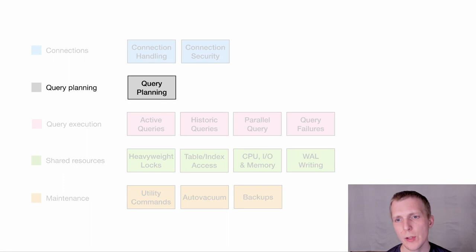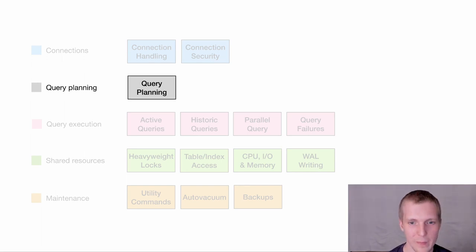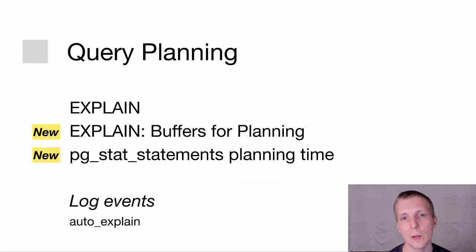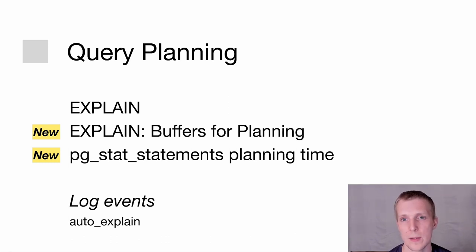Next, query planning. Query planning is obviously very important — every query gets planned at some point. If you look at query planning, EXPLAIN is our main Swiss Army knife. There are two good improvements in Postgres 13: first, you now see the buffers being used for planning as part of EXPLAIN output; and second, pg_stat_statements now shows the planning time, meaning you can get an aggregate view.